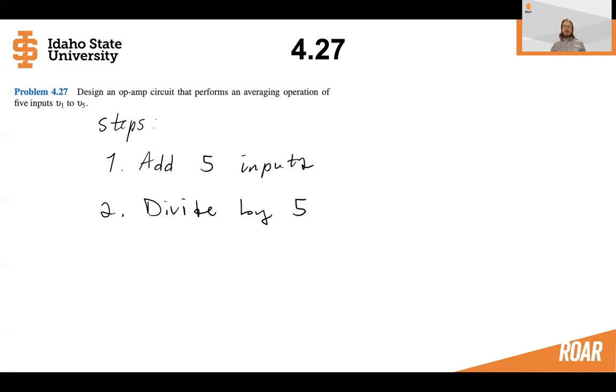So let's think about this in two steps. The first one is we should add five inputs, and the second step is that we should divide by five. So we might be able to do this in a number of different ways, and if we're clever, which we will be, we'll see that we can do this in two steps and that this first step is going to do most of what we need.